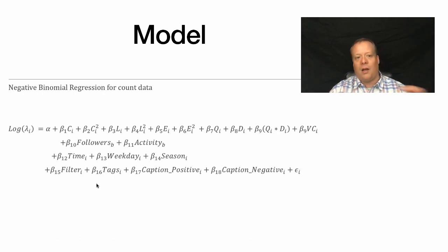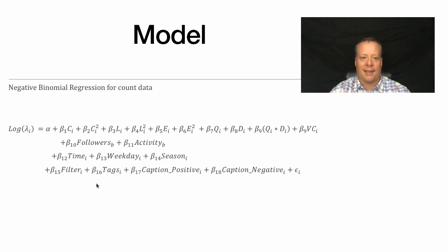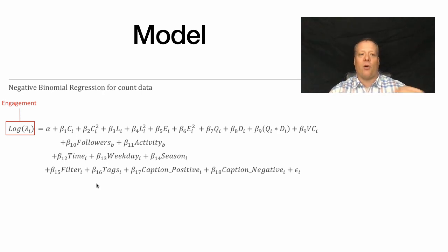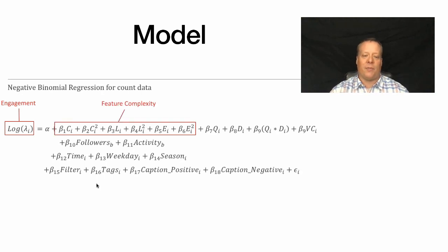We developed a binomial regression model, very similar to the regression models covered earlier in the class. The dependent variable was the log of the number of likes — we used log because it's a skewed distribution and we want a more normal distribution as the output measure.